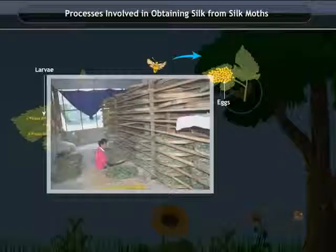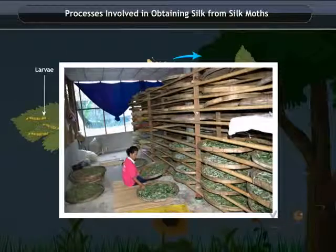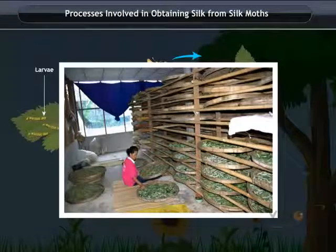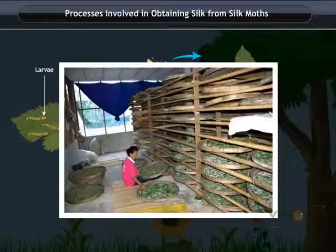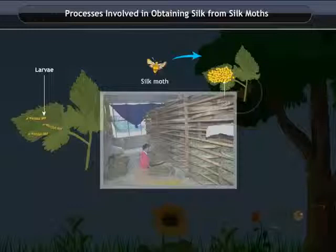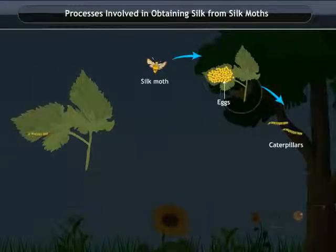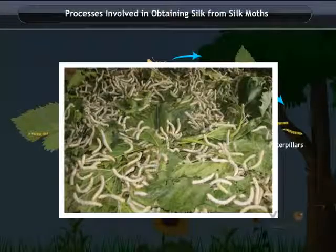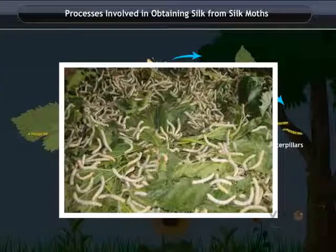When the larva hatch, they are placed in clean bamboo trays where they are provided with mulberry leaves. Caterpillars eat a large amount of leaves and increase in size at a very rapid pace.